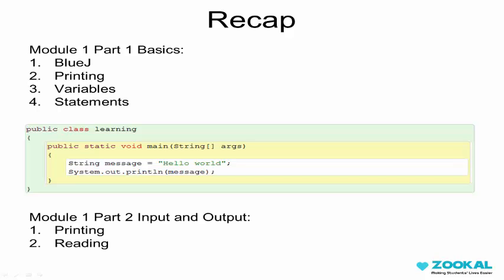So that's all for today folks. To recap, we learnt what BlueJ is and how to start using it, we learnt how to print, and we learnt what variables and statements are. Here's the code we focused on. In case you didn't work it out, this is how you would use a variable — I called the variable message and it contains the string hello world. These are both statements: the first declares and initializes the variable and the next one is a print statement. Next video, we'll be talking about input and output, covering a bit more about printing and learning how to read and utilize user input.